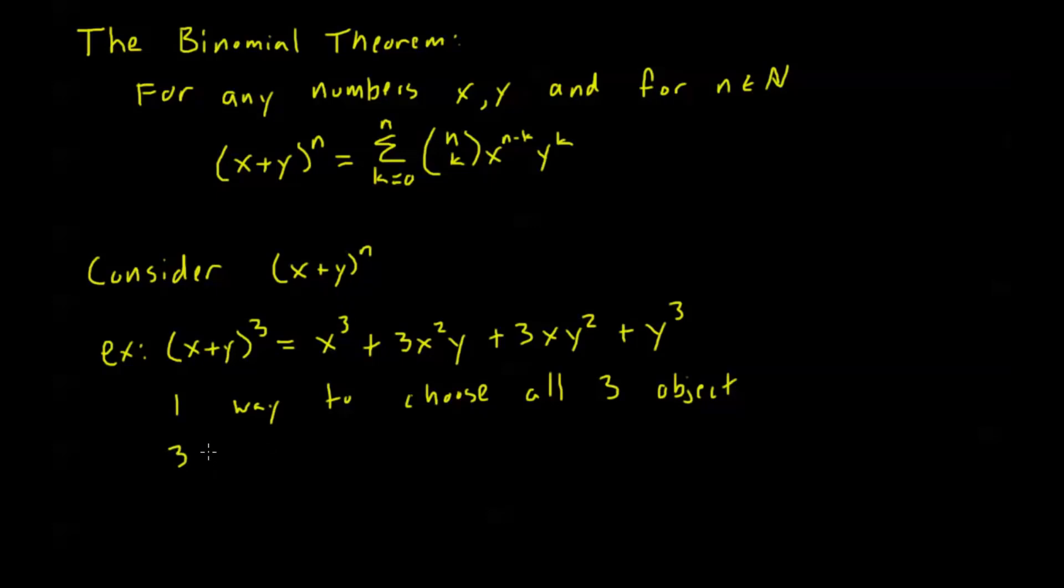We said that x was choosing that object, represented by x plus y, and y was not choosing that object. Now there's going to be three ways to choose two objects. That's given by this term right here, 3 times x squared y. This x squared means I've chosen two objects, and there are three different ways for me to do that. There were three different ways for me to arrange this product, where two of the terms are represented by x, and one of the terms is represented by y. Similarly, there's three ways to choose one object, and there is one way to not choose any objects, or to choose zero objects.